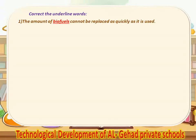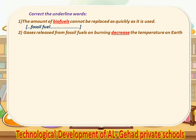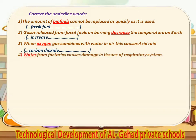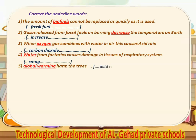Correct the underlined words. Number 1, the amount of biofuels cannot be replaced as quickly as fossil fuel is used — fossil fuels. Number 2, gases released from fossil fuel on burning decrease the temperature of the earth — increase. Number 3, when oxygen gas combines with water in the air it causes acid rain — carbon dioxide. Number 4, water from factories causes damage in tissues of the respiratory system — smoke. Number 5, global warming harms the trees — acid rain.